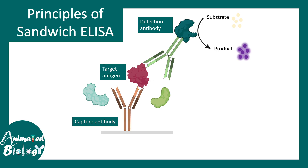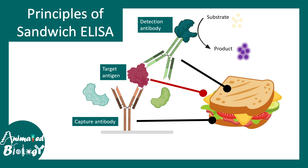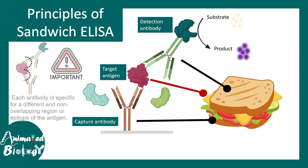Generally the product is colored and the color change can be detected by colorimetric methods. This particular arrangement of antigen and antibody interaction is very much like a sandwich — both antibodies are like the bread, and the target antigen is like the filling inside. That is why it is known as sandwich ELISA.